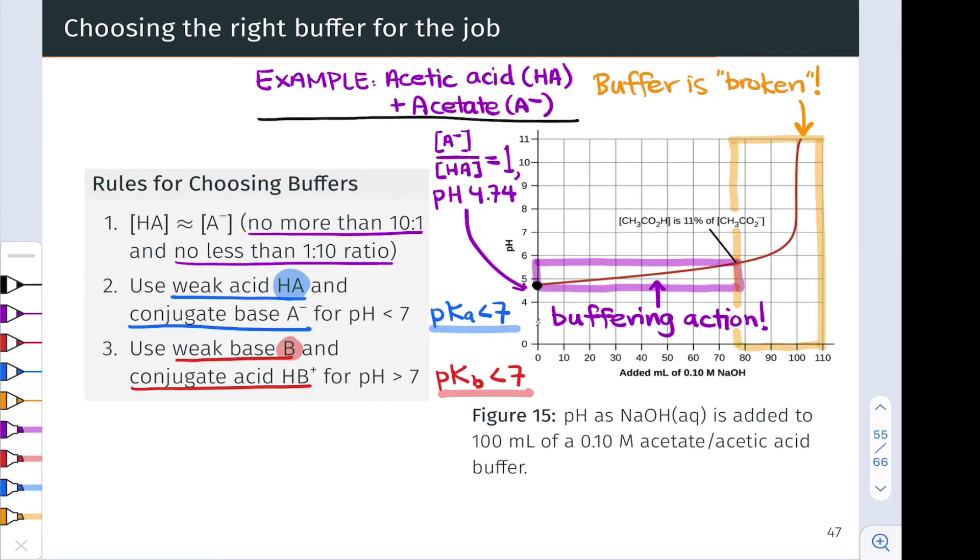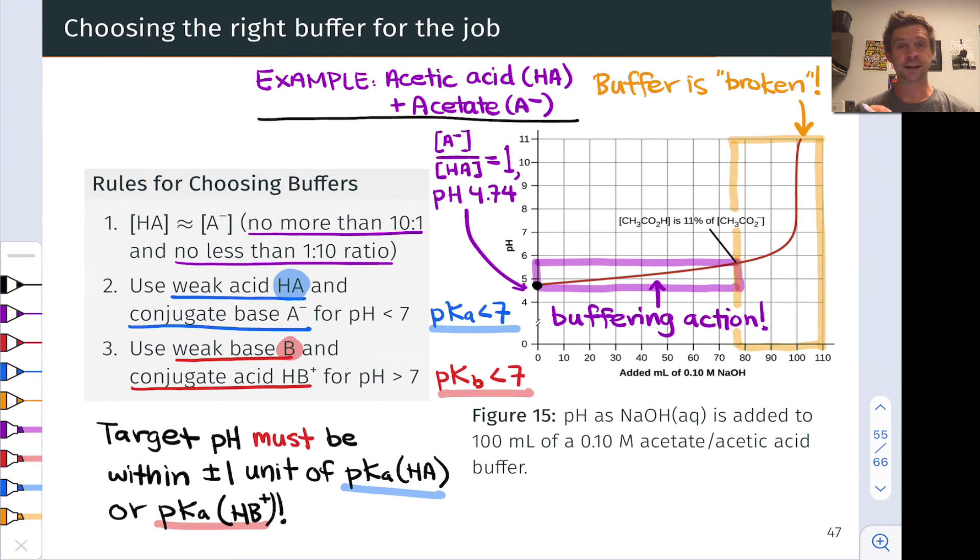The upshot of this for choosing the right buffer for the job and designing a buffer system at a target pH is that the target pH must be within plus or minus one unit of the pKa of HA if we're using a weak acid, or the pKa of HB⁺ if we're using a weak base B. We have to choose the weak acid or weak base such that the target pH is within plus or minus one pH unit of the pKa of the acid involved in the conjugate pair. This is our guiding light for designing buffer solutions.